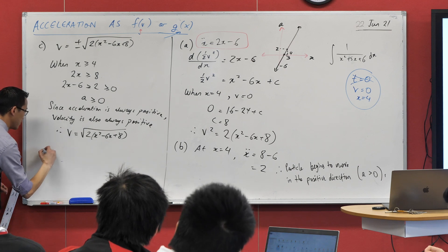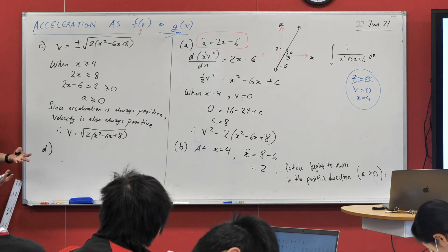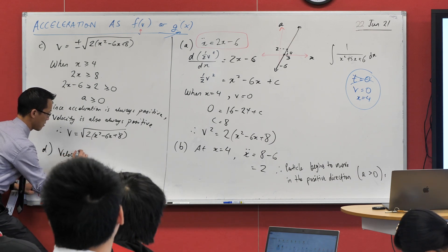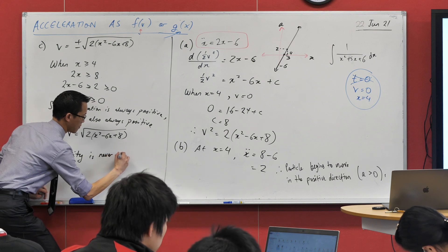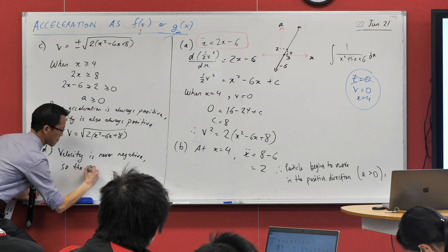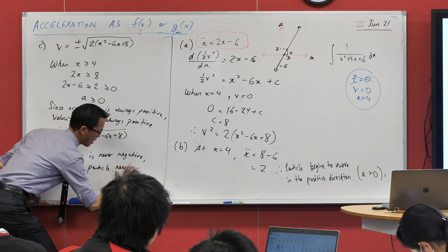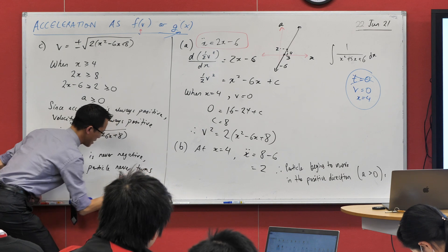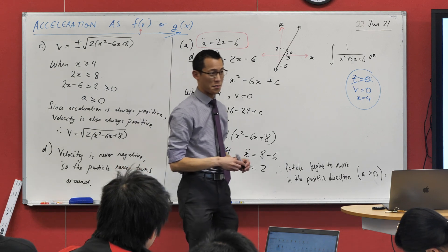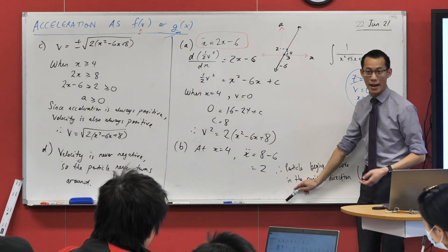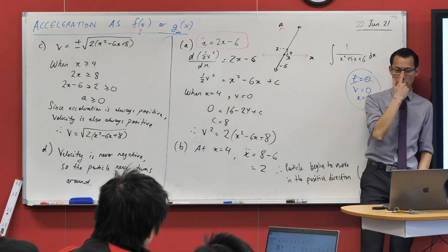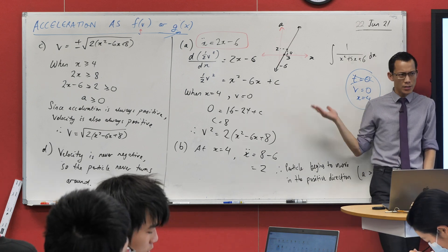So therefore, part D, I can say, since velocity is never negative, velocity is never negative. So the particle never turns around. And in fact, you will sometimes see a question that will say something like, describe the motion of the particle. And this is also kind of what they're looking for. It's like, explain to me, in words, what that thing is doing. This is just a very specific explanation of where the particle is going. Does that make sense?